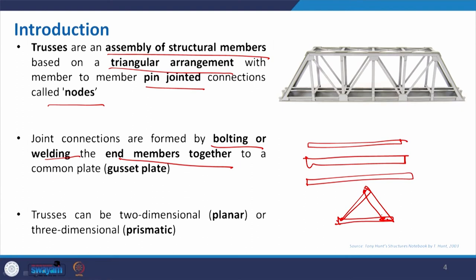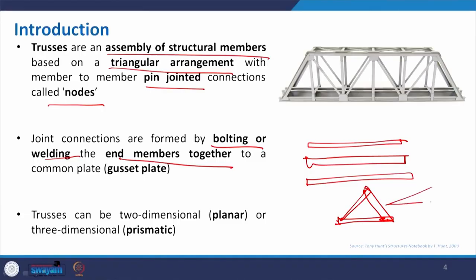Depending on the load it can carry, the number of members will be decided and the arrangement will also differ. The angle will be determined based on whether it will have a low rise or high rise — and I think all of you now know about what rise is, as we discussed it when we covered arches, sail structures, and dome structures. Depending on the angle, we can have a broad or very narrow angle.